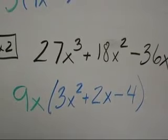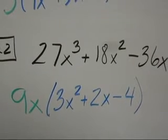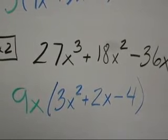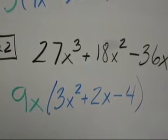Now, 9x multiplied by what is positive 18x squared? 9 times 2 is 18, and x times x is x squared, so my common term is 2x.